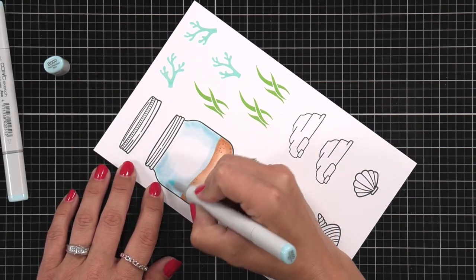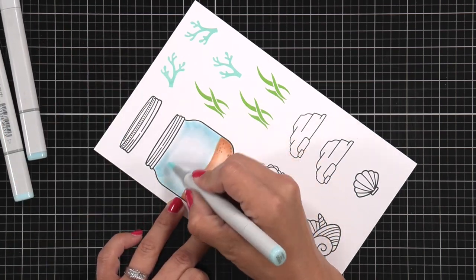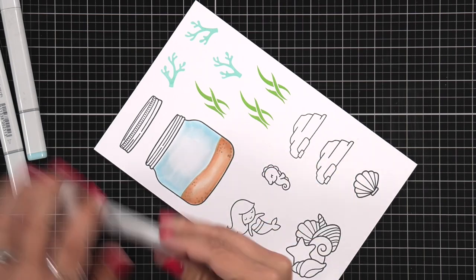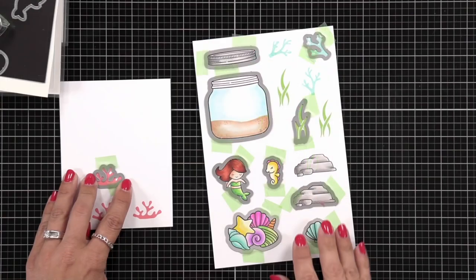Now here I'm using some light blues. I'm also going to take that light blue and just really lightly color over that sand to give the illusion that the water is kind of mixed with that sand.